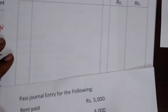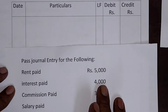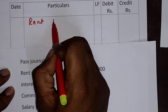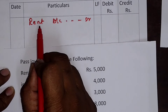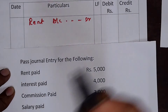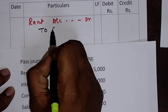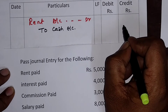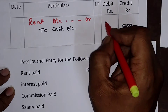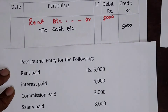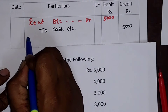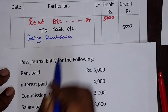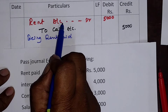For the first expense — rent paid rupees 5,000 — the journal entry is: Rent Account — Debit — rupees 5,000. This is my expenses debit, as increase in expenses is debited. Cash is an asset; it decreases, therefore credit: To Cash Account — rupees 5,000. The narration is: Being rent paid. In all these cases, the first line is the expense and the second line is cash.